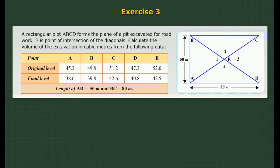Problem: A rectangular plot ABCD forms the plane of a pit excavated for road work. E is the point of intersection of the diagonals. Calculate the volume of the excavation in cubic metres from the given data.